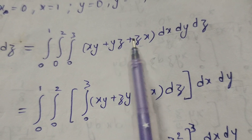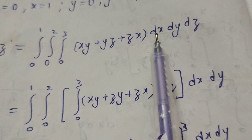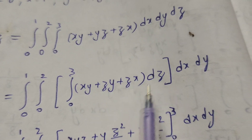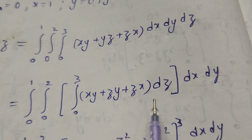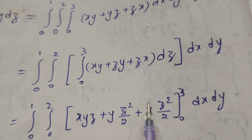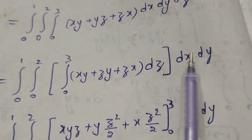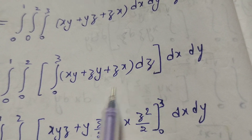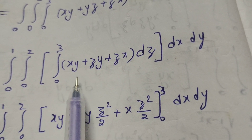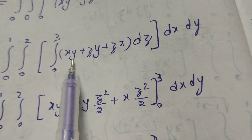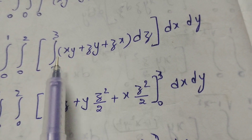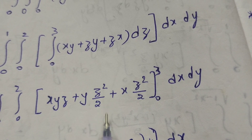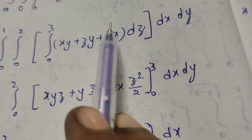We integrate one by one with respect to dx dy dz according to the limits for x, y, z. First, integrating with respect to z — x and y are treated as constants. The integral gives: xy·z + y·(z²/2) + x·(z²/2), evaluated with limits 0 to 3, then dx dy remaining.